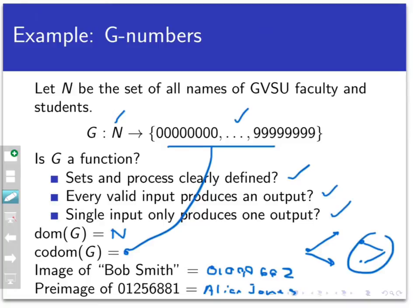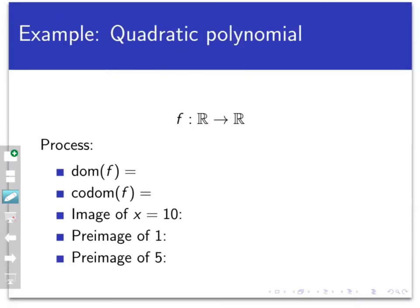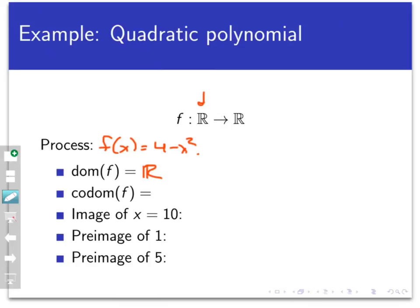Here's a new example that looks more like mathematics. Let's define a function f from the real numbers to the real numbers — so it accepts real numbers as input and produces real numbers as output. I also need to define the process: f of x equals 4 minus x squared. This is a rule that says take a number, calculate its square, then subtract it from 4. The domain of f is the set of real numbers and the co-domain of f is also the set of real numbers.